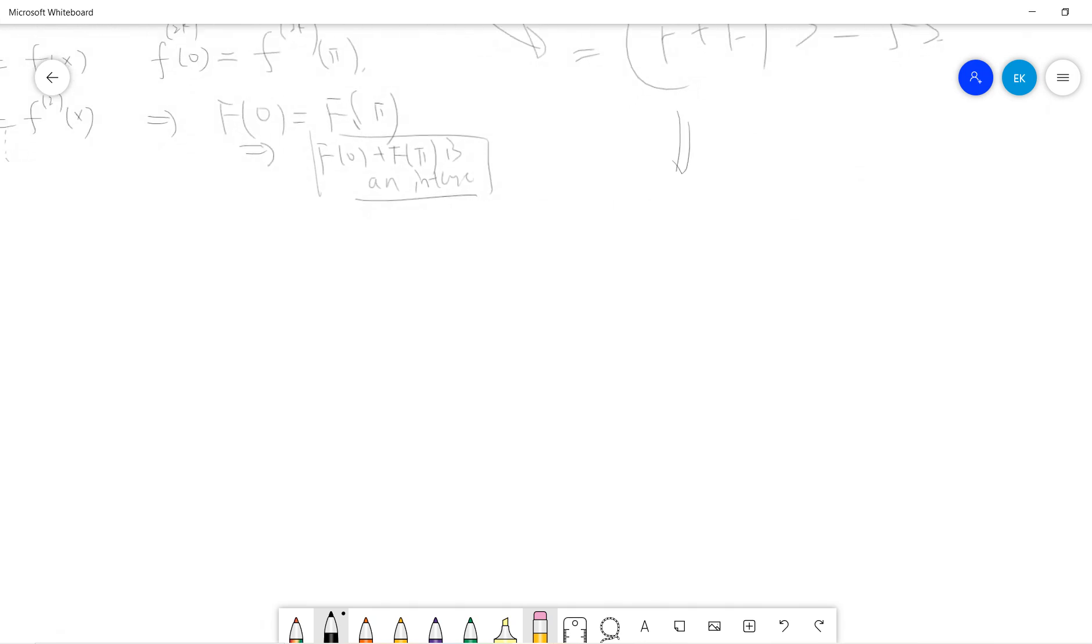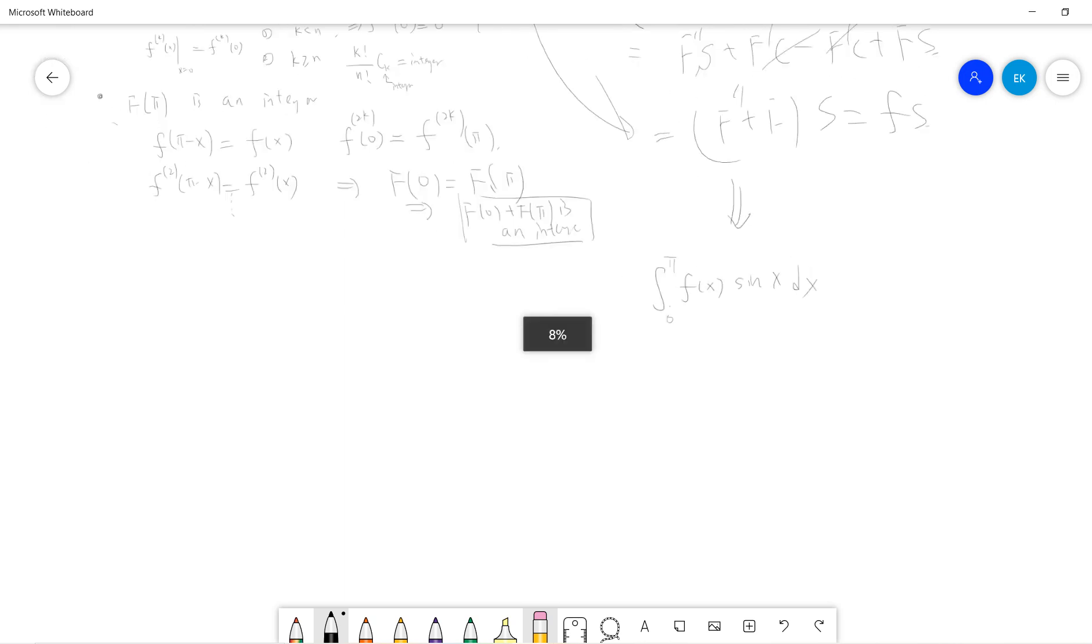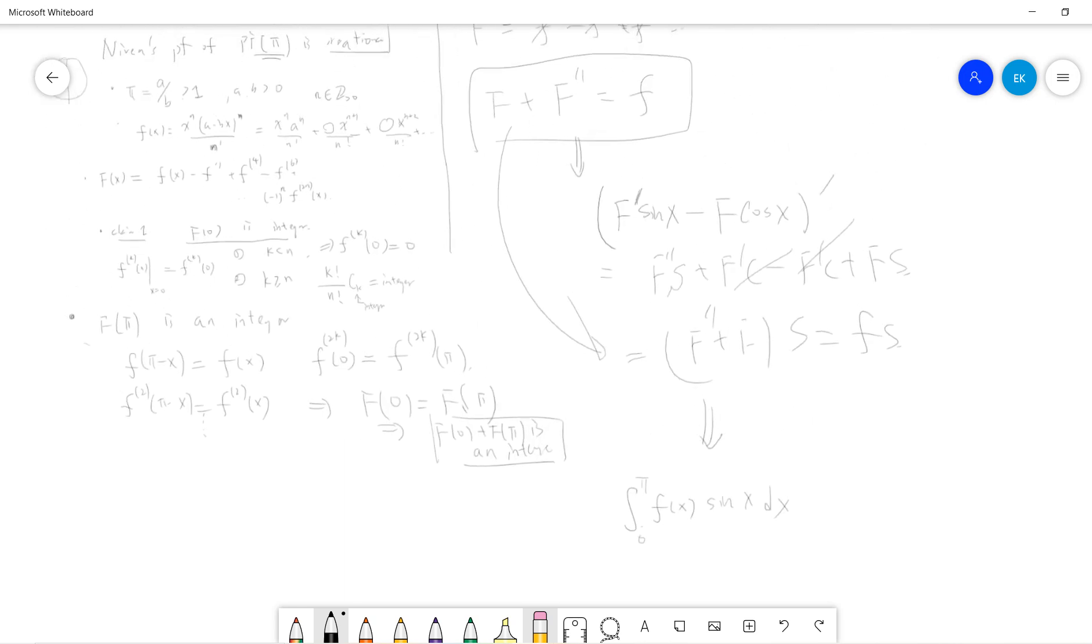From here, we know that, suppose we do the integral of f(x)sin(x)dx from 0 to π. This is a very crucial step that will reveal everything. First notice that f(x)sin(x) is a positive function, because f(x) is positive, because π is a divided by b, and I only integrate from 0 to π. For each term, it's always positive, except for the boundary. So this integral must be greater or equal to 0.